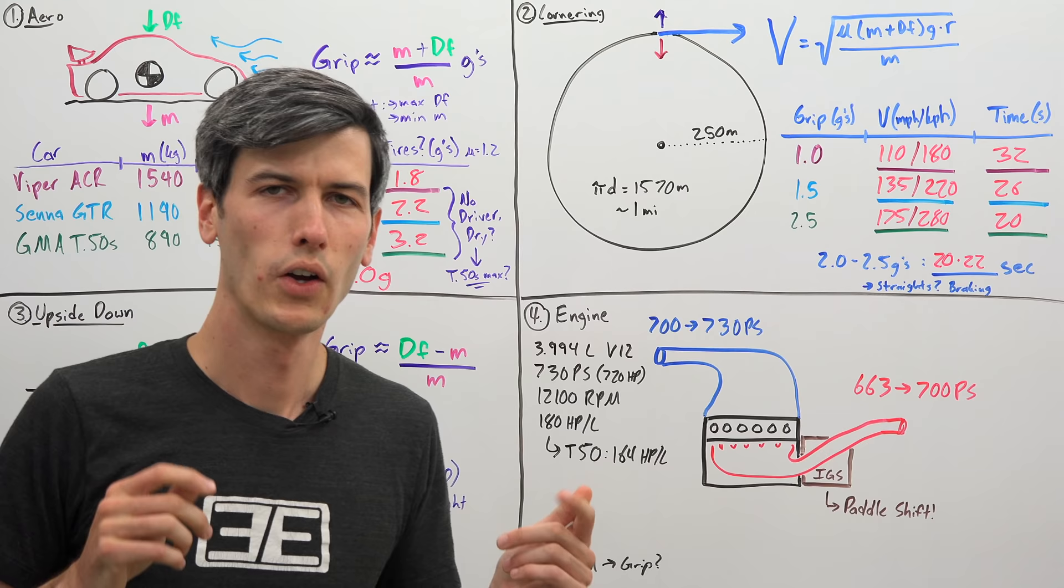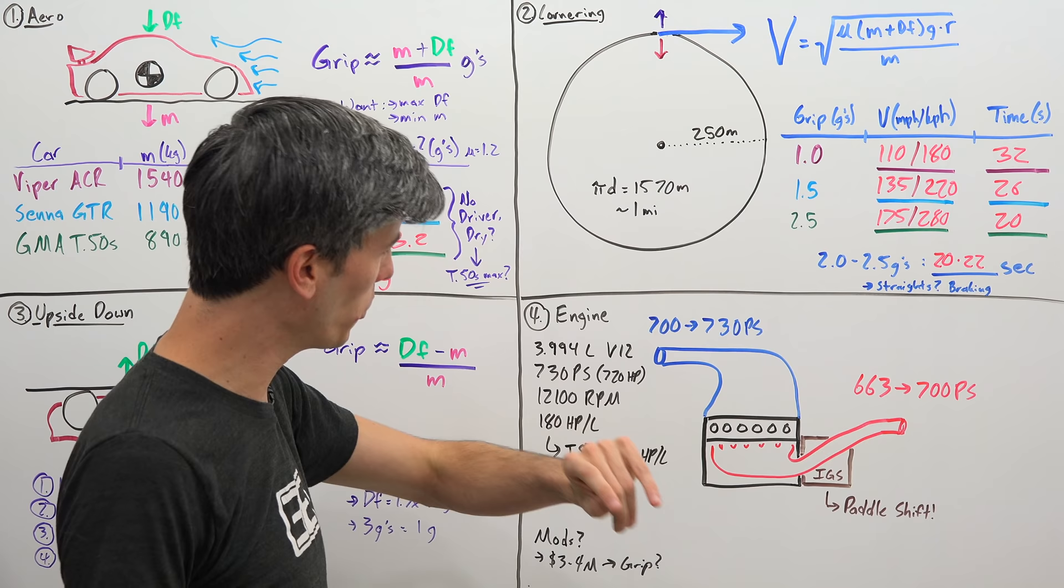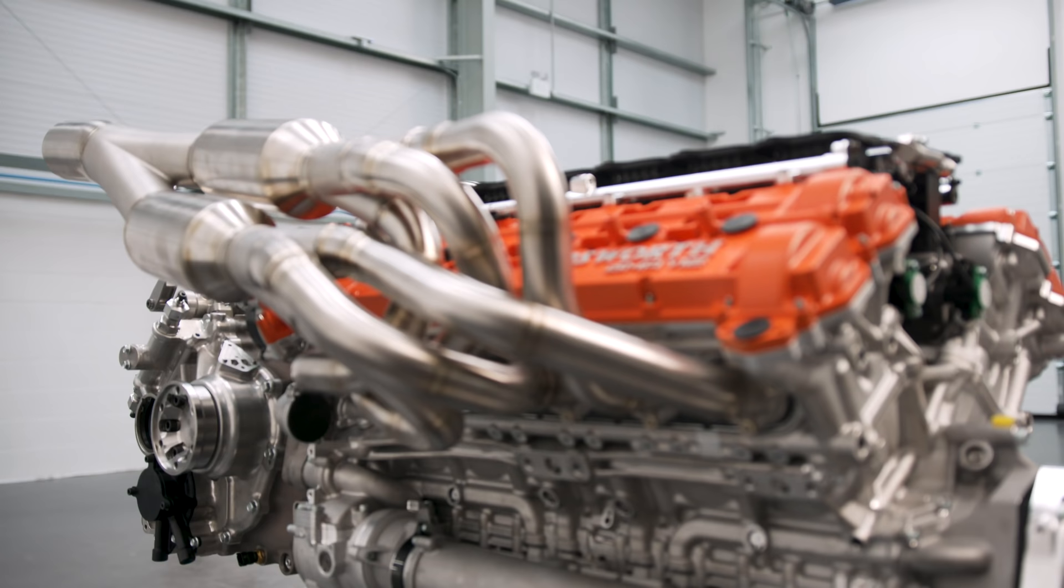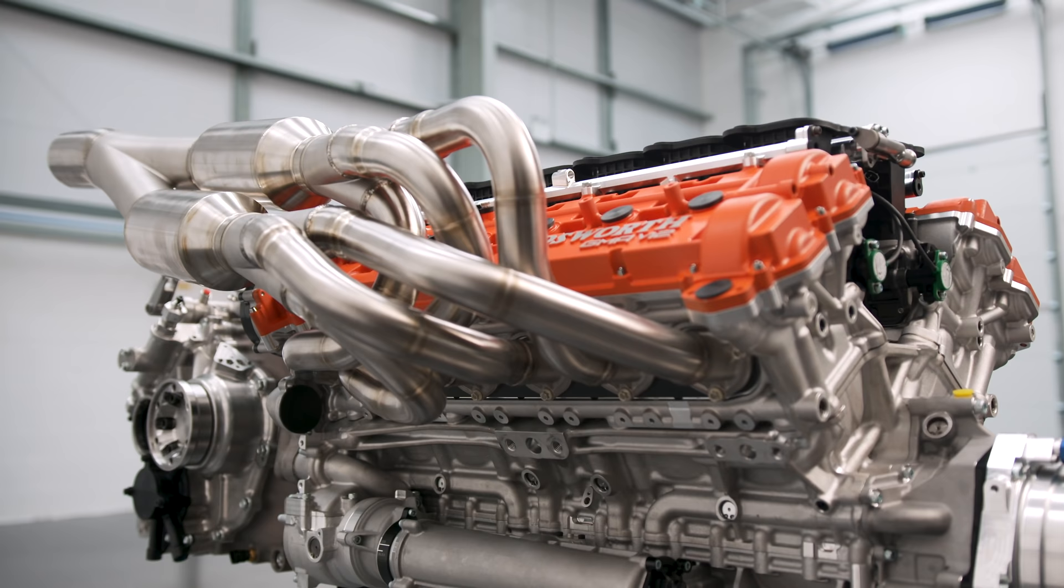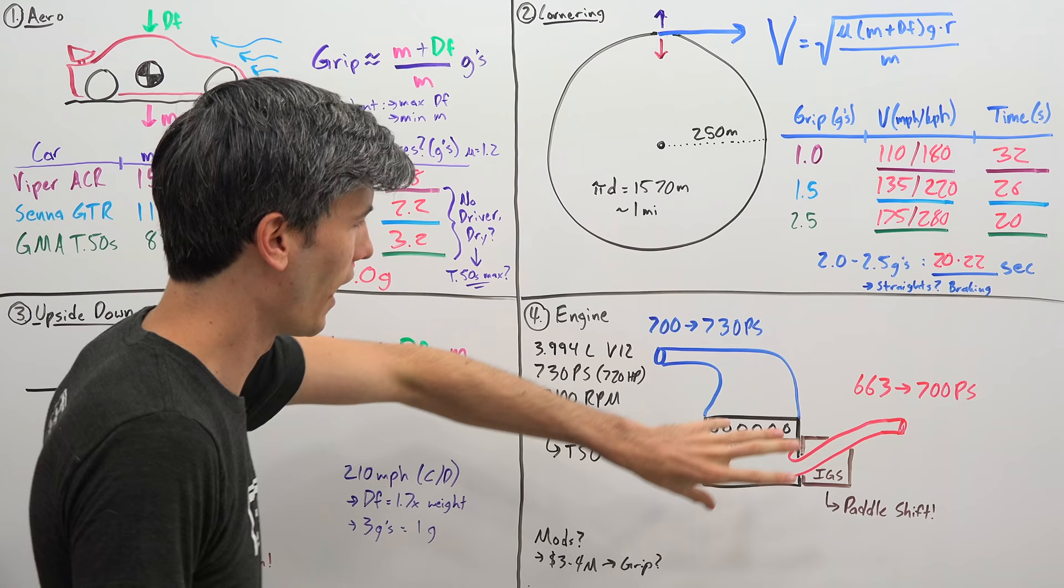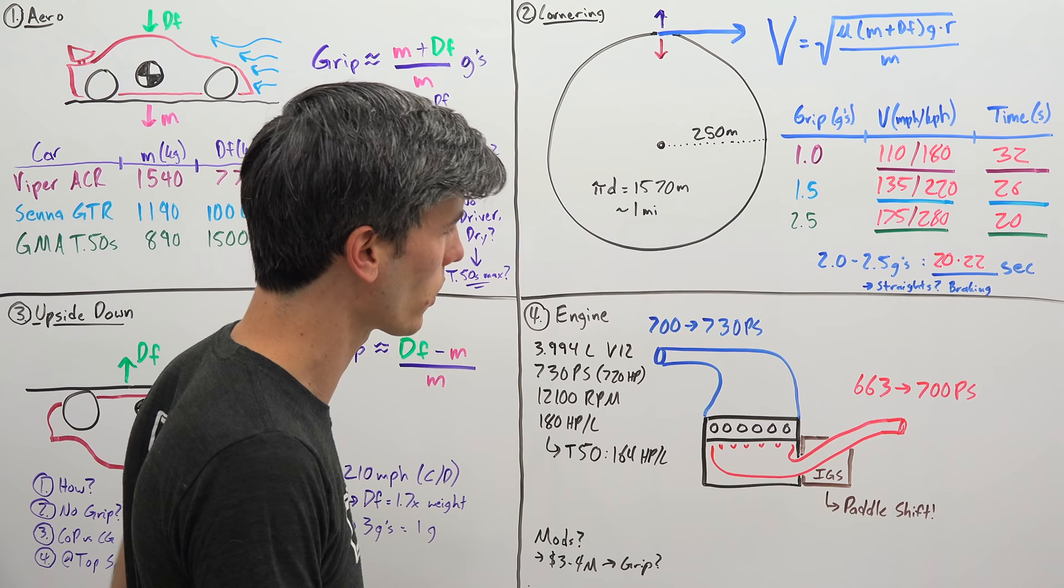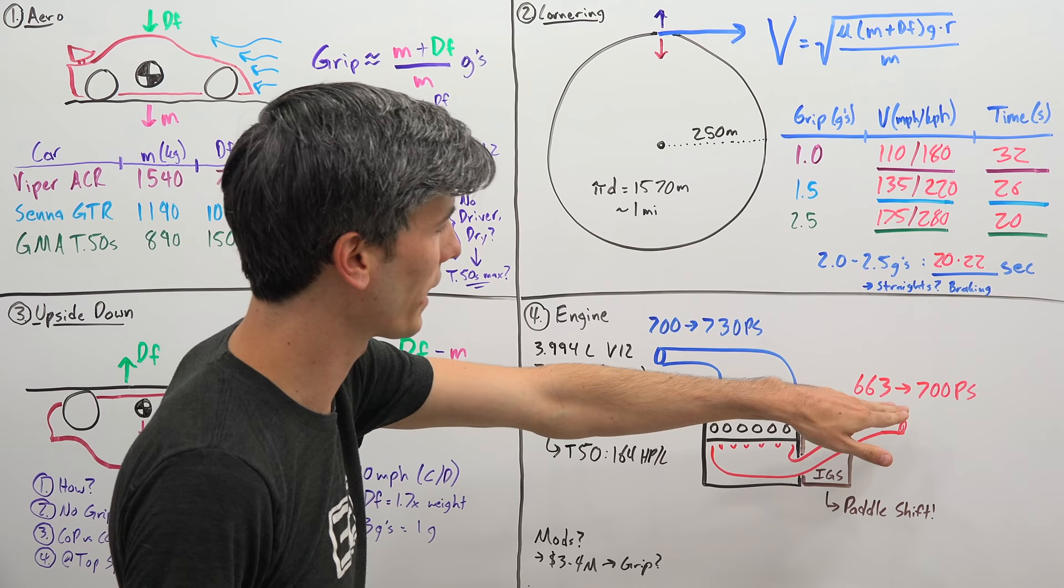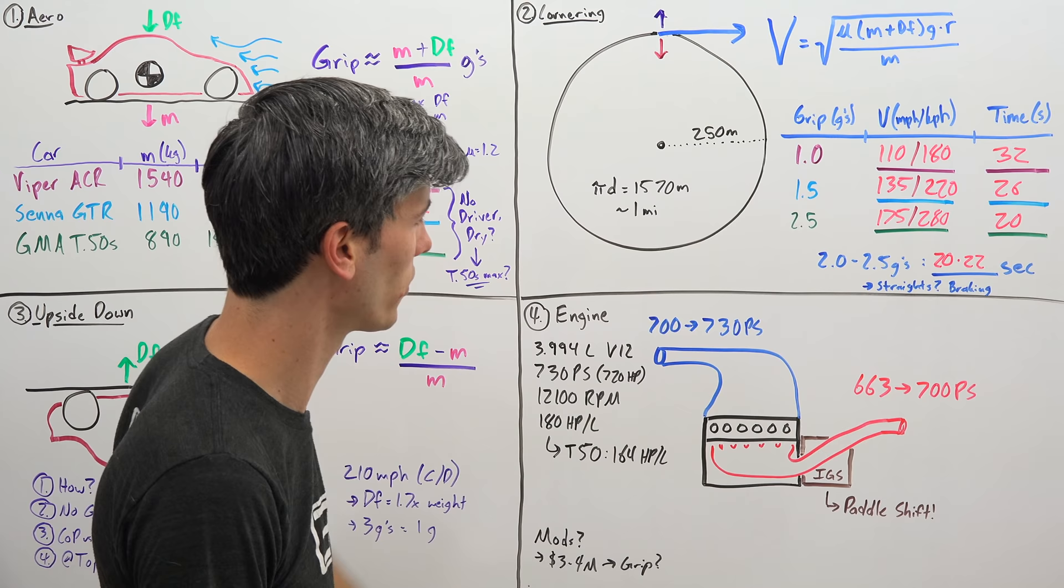Let's move on to the engine, and they made some pretty cool changes for this engine in order for it to make more horsepower. It's still that same 4 liter naturally aspirated V12 revving to the same 12,100 rpm—absolutely insane—but now instead of 663 metric horsepower, thanks to not having any emissions equipment or noise control through your exhaust because this is a track-only car, it's making 700 metric horsepower.